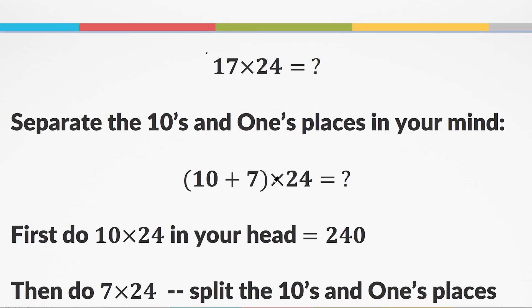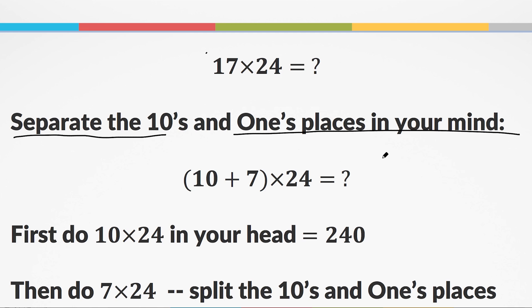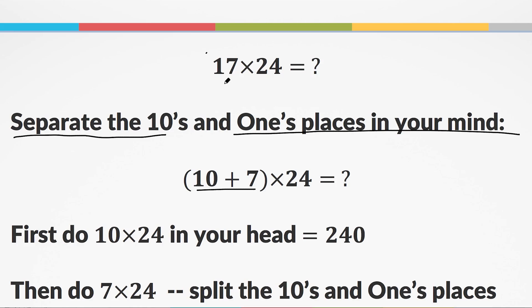Recently with the common core, this is now the standard way teachers are teaching multiplication, but they teach you to write it out as opposed to doing it in your head. The awesome thing about partial product is that you can actually do almost all of it in your head. Here's the problem: 17 times 24. The idea is like the distributive property backwards — we separate the tens and ones places in our minds. Instead of 17 times 24, I think about 10 times 24 and 7 times 24, then add them together.